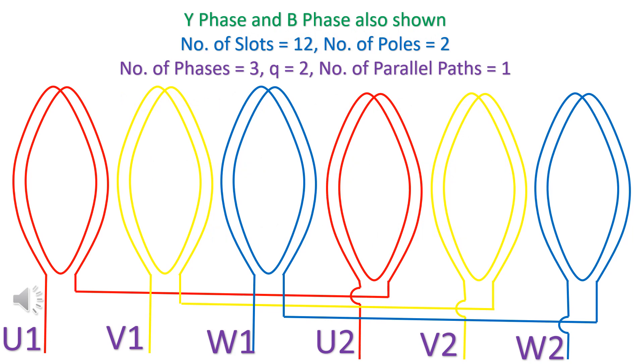Y phase and B phase are also shown. Number of slots is equal to 12. Number of poles is equal to 2. Number of phases is equal to 3. Q is equal to 2. Number of parallel paths is equal to 1.